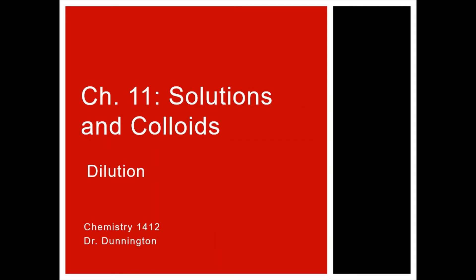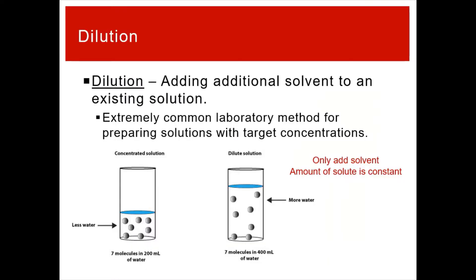Dilution is the process of adding extra solvent to an existing solution. If you have something dissolved in 200 milliliters of water and you add extra water to get 400 milliliters, you have diluted the solution. This leads to decreasing the concentration, producing a more dilute solution. This is extremely common in the lab for preparing solutions if you want a particular concentration.